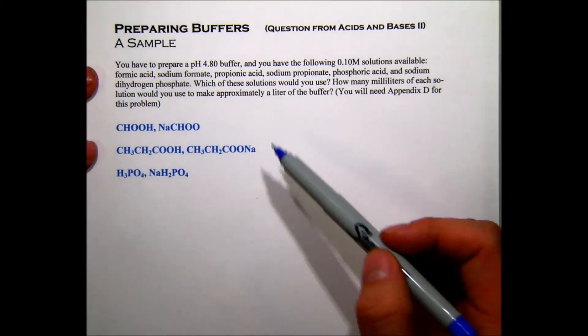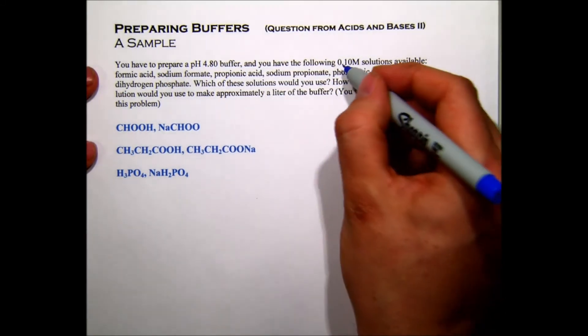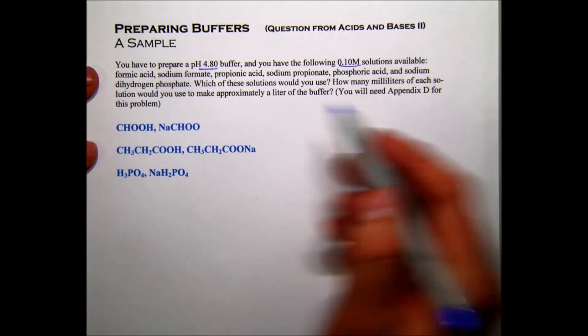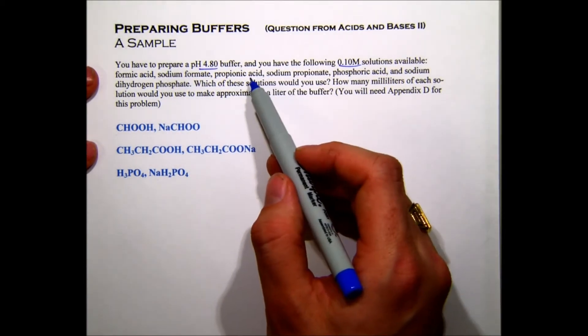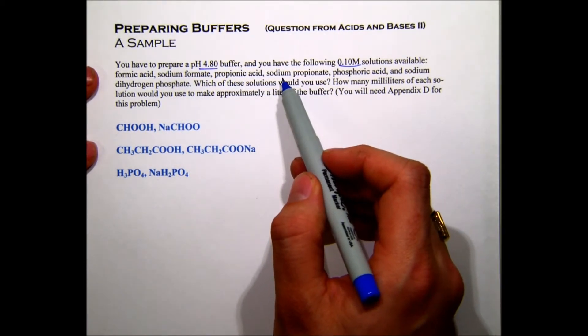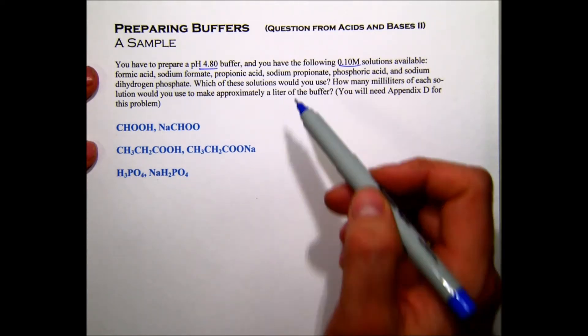It says you have to prepare a buffer of pH 4.8. You have the following 0.1 molar solutions: formic acid and sodium formate, that's one pair; propanoic acid and sodium propanoate, that's the second pair; and phosphoric acid and sodium dihydrogen phosphate is the third pair.